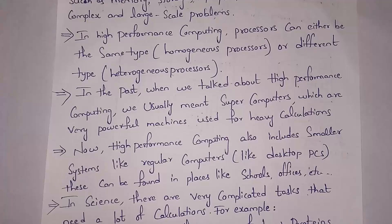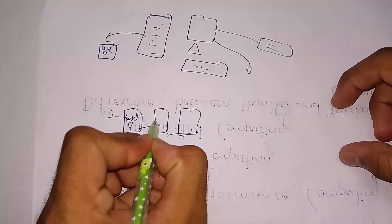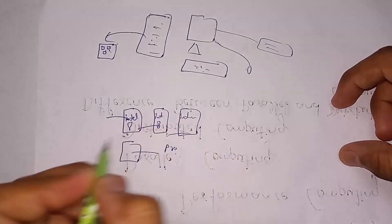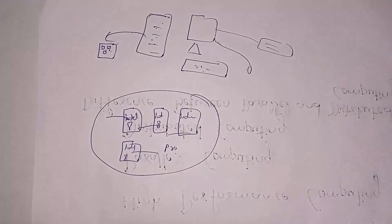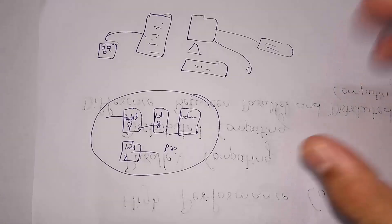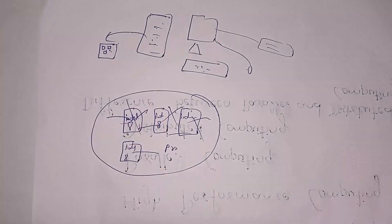In high performance computing, processors can be either of the same type or different types. If they are of the same type then we call them homogeneous processors, and if they are of different types then we call them heterogeneous processors. For example, if inside a CPU all four processors are Intel 8-core processors, they are all the same type — that is homogeneous. If they are all different types, we call them heterogeneous processors.